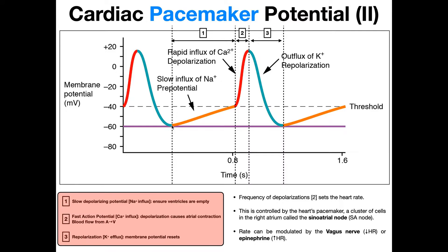All that has to happen is the previous cycle finishes repolarization, and you're automatically at the value you need for that sodium channel to open. So the sodium channel opens and we get this slow influx of sodium. This is called the prepotential, and it will generally take the membrane potential from about negative 60 to negative 40. That's significant because the calcium channels will open when the membrane potential gets to about negative 40.